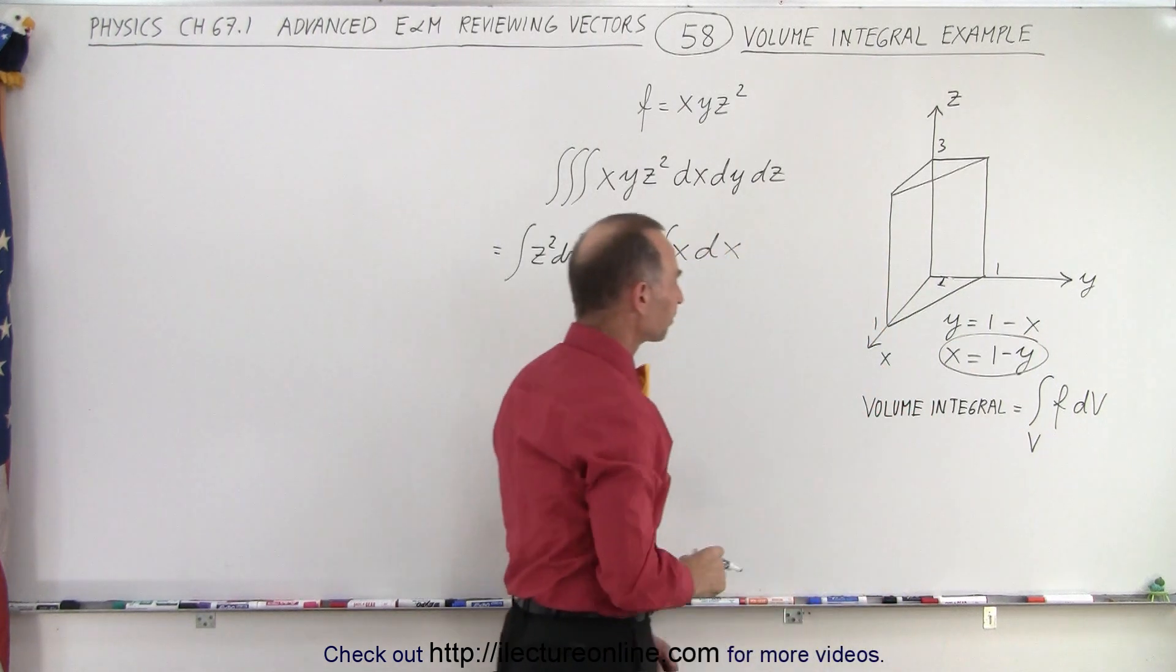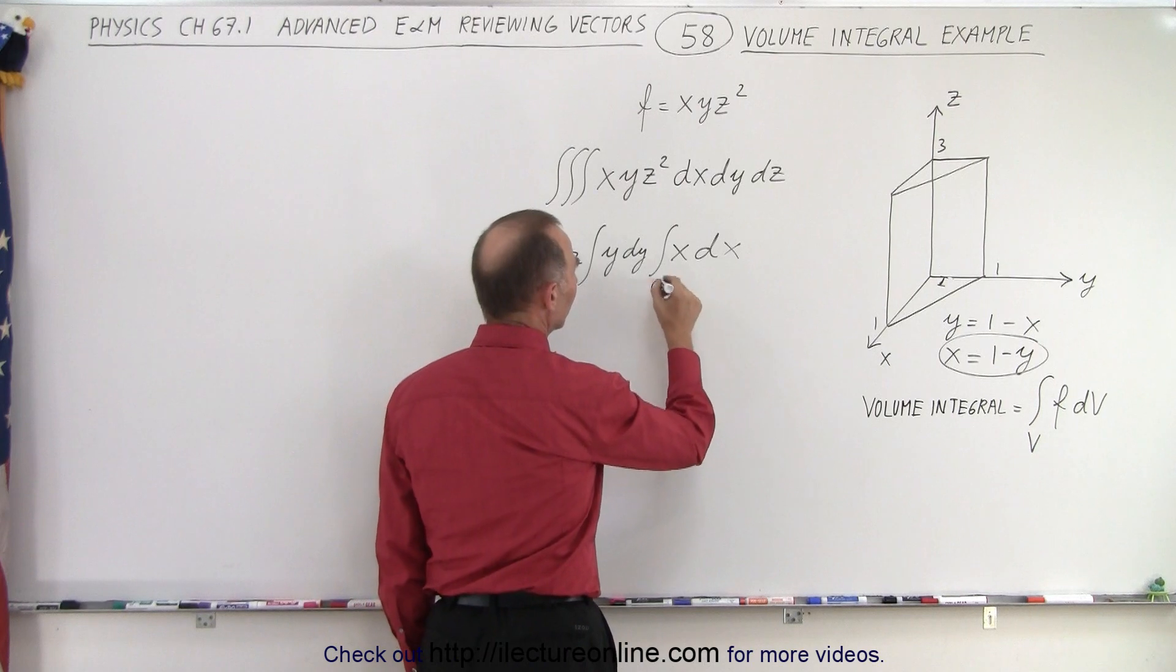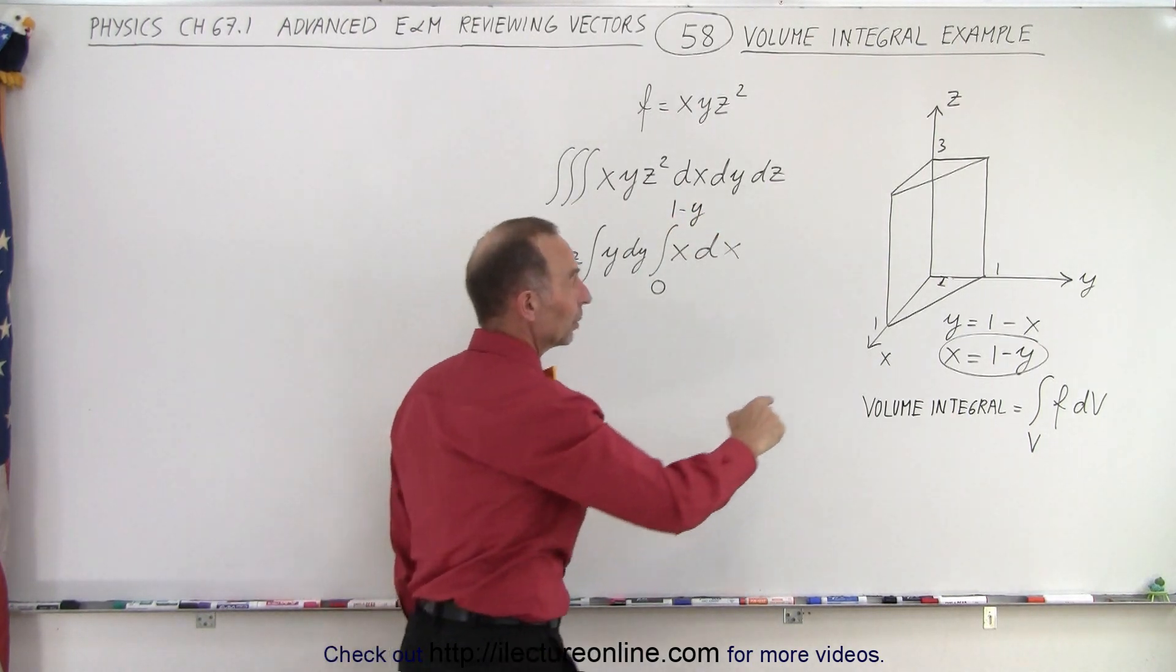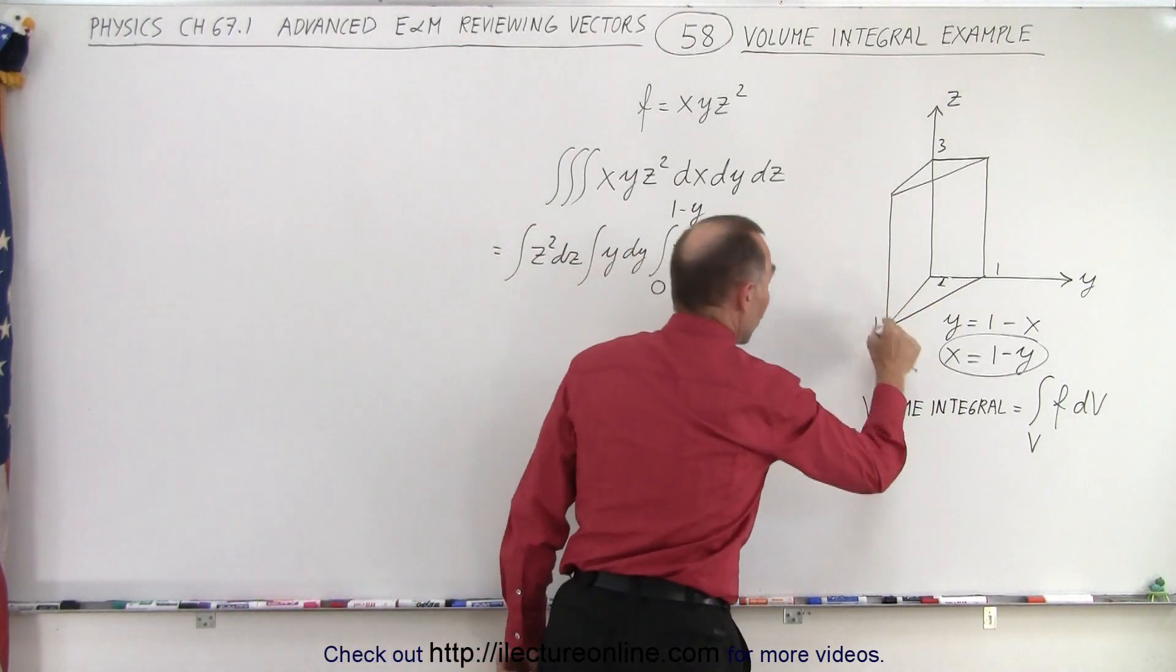So notice that what we can do here is we can have limits from x equals 0 to x equals 1 minus y. And that way we're integrating from here to that line right there, because we're not integrating from 0 to 1.